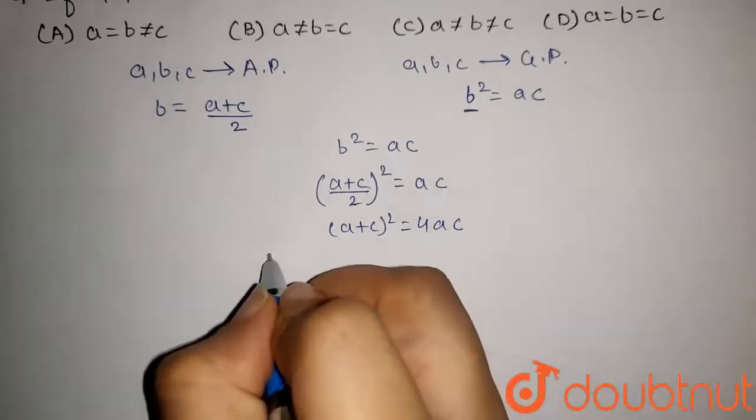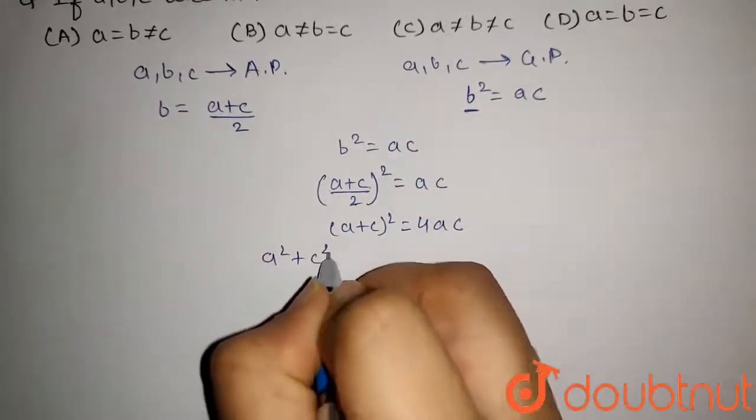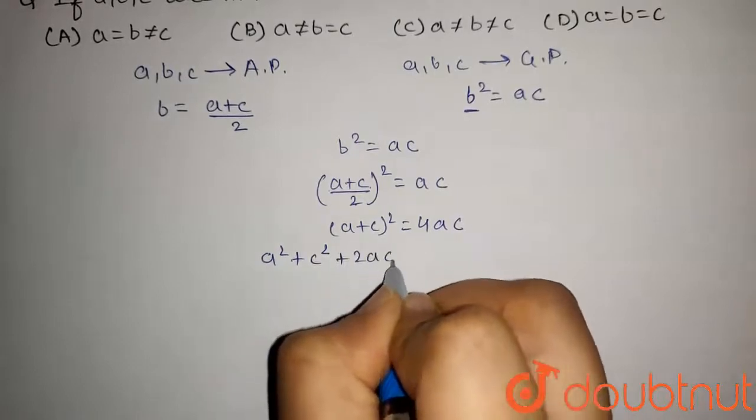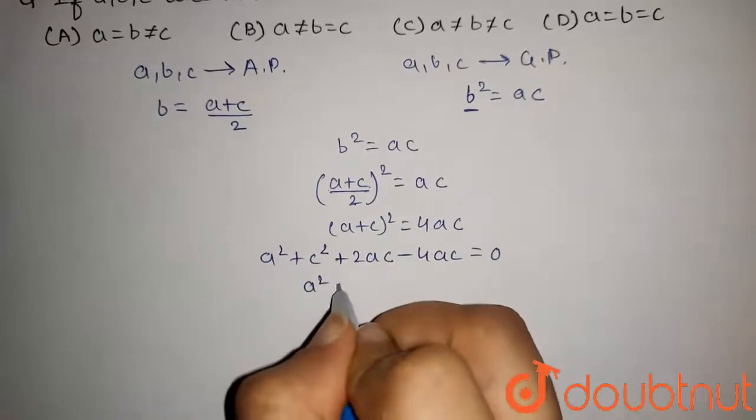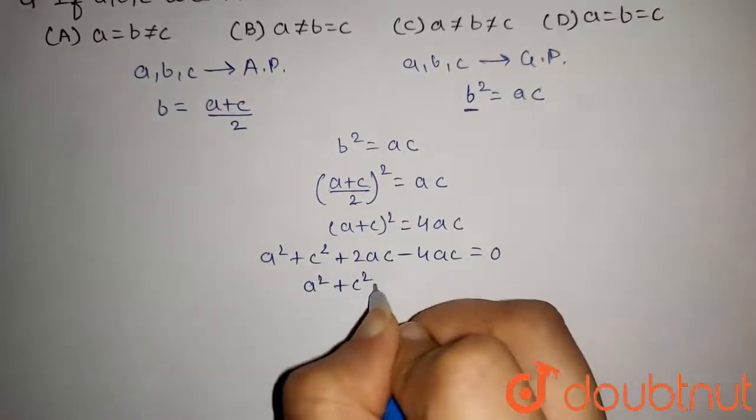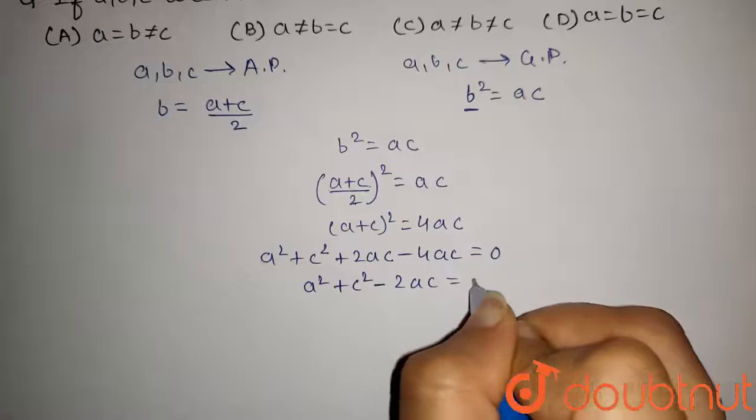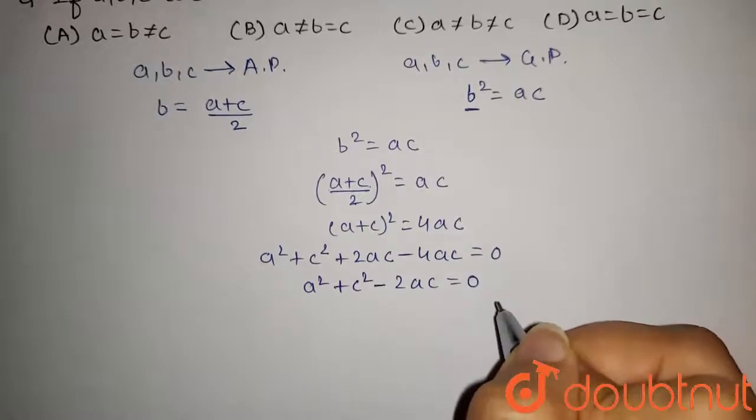This will be equal to A square plus C square plus 2AC minus 4AC equals 0, and we have A square plus C square minus 2AC equals 0. We know the formula A minus B whole square equals A square plus B square minus 2AB.